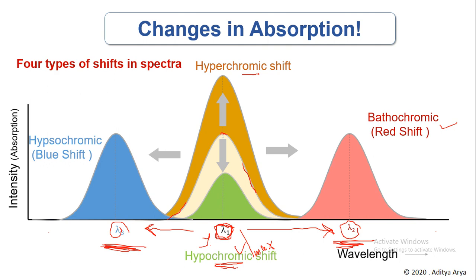So now we have a summary: hyperchromic shift is an increase in intensity, hypochromic shift is a decrease in intensity — in both situations lambda max does not change. Then we have bathochromic shift where lambda max increases, and hypsochromic shift where lambda max decreases. These two situations may also be concurrent with hypochromic or hyperchromic shifts, meaning intensity might also increase or decrease during a red shift or blue shift.